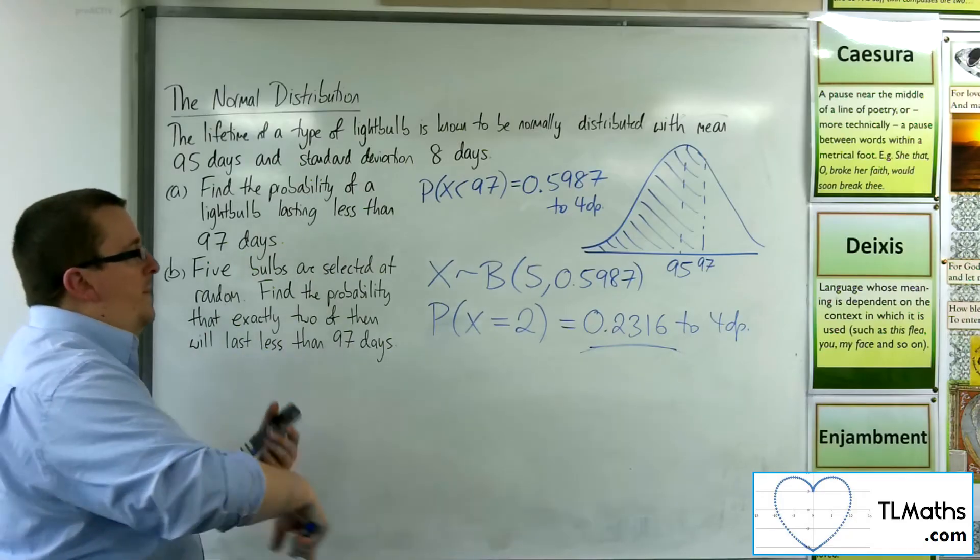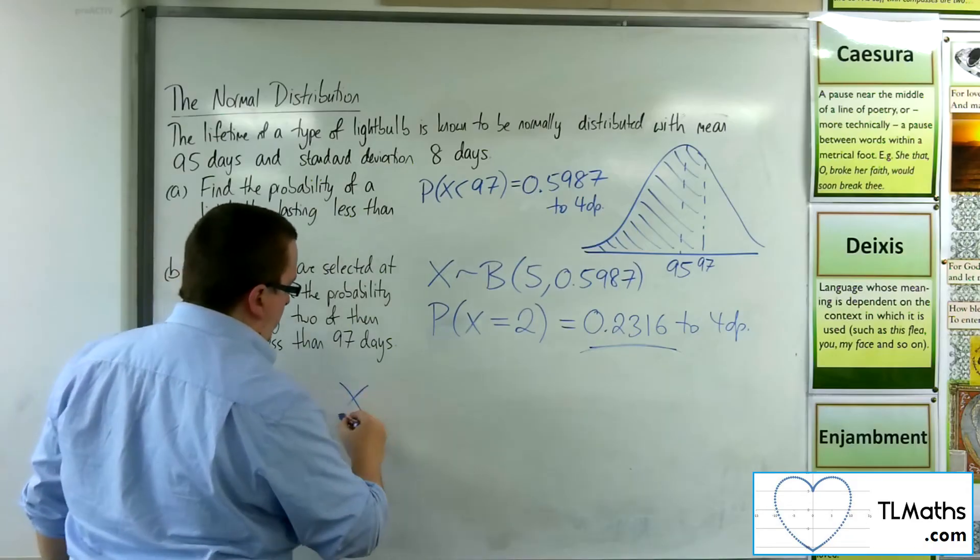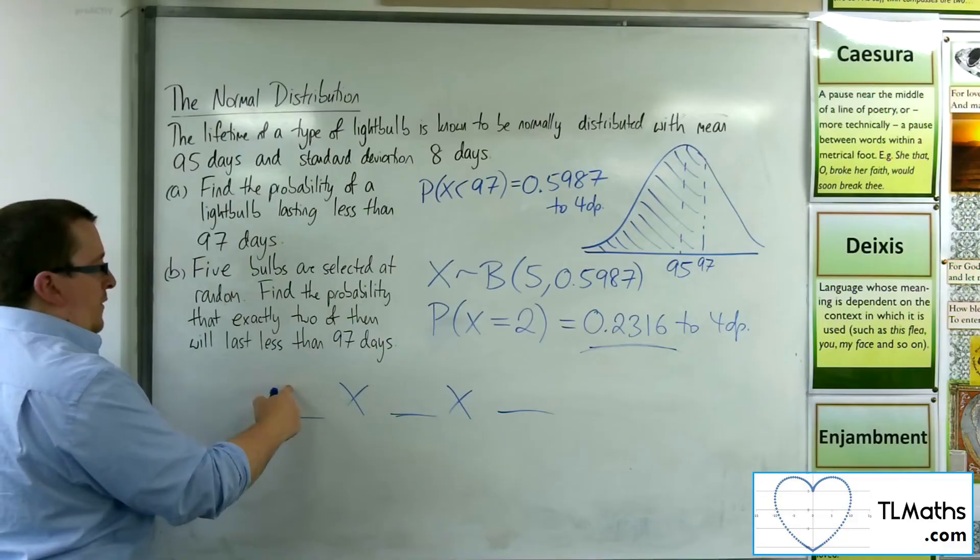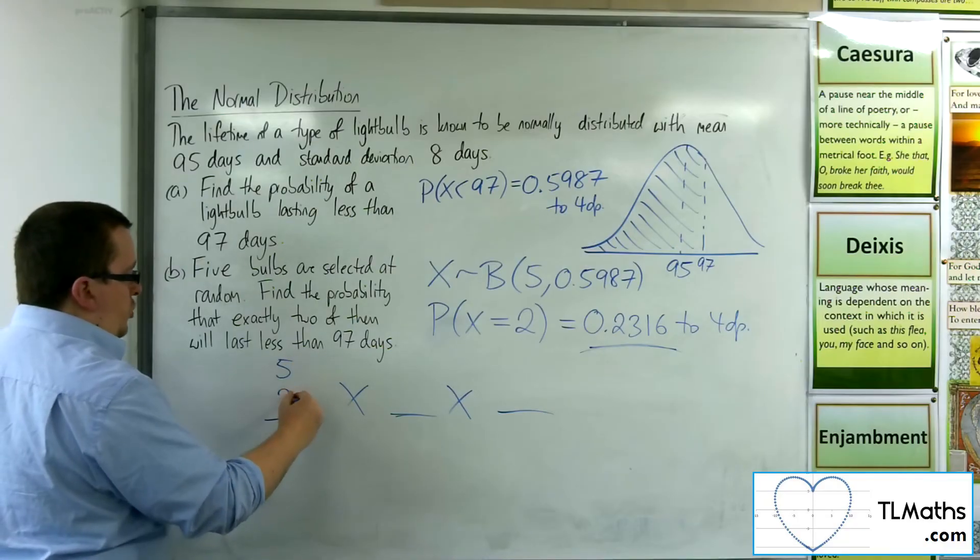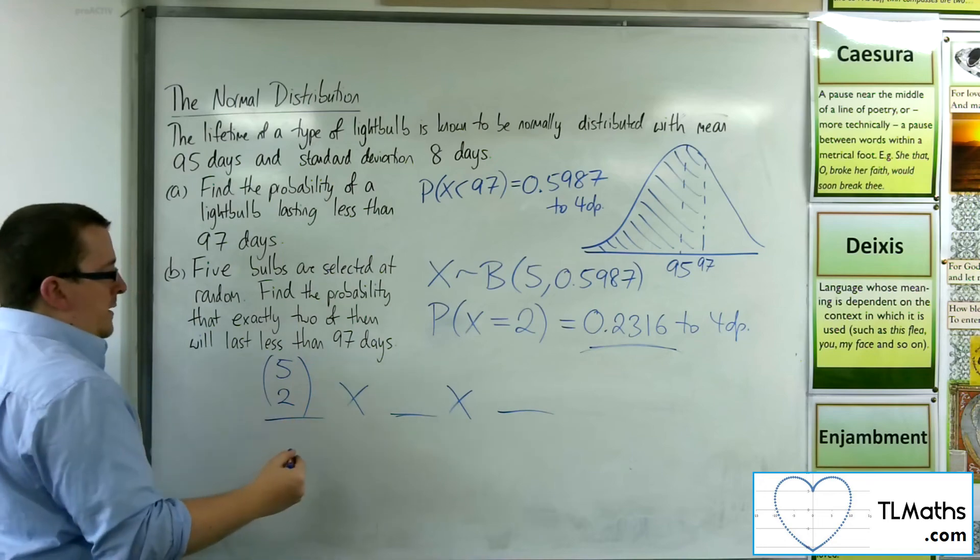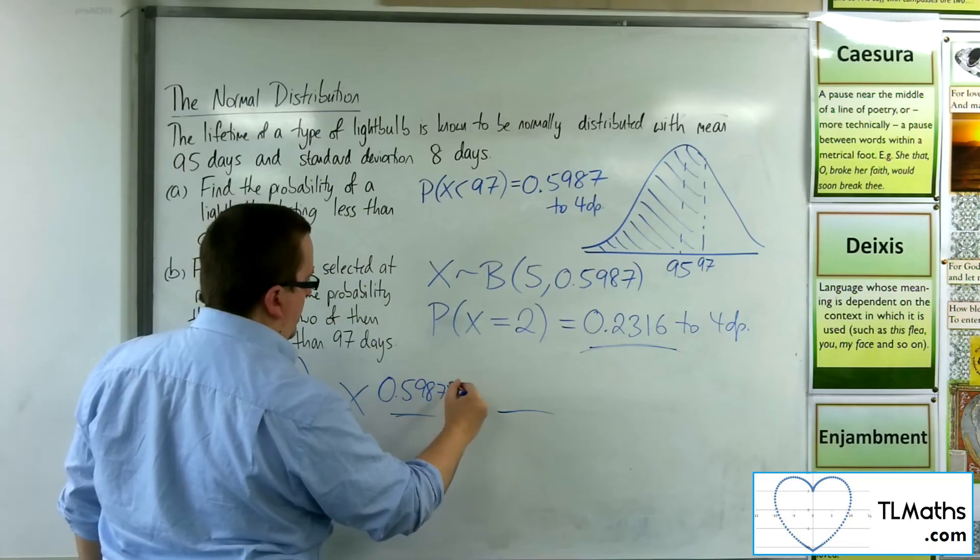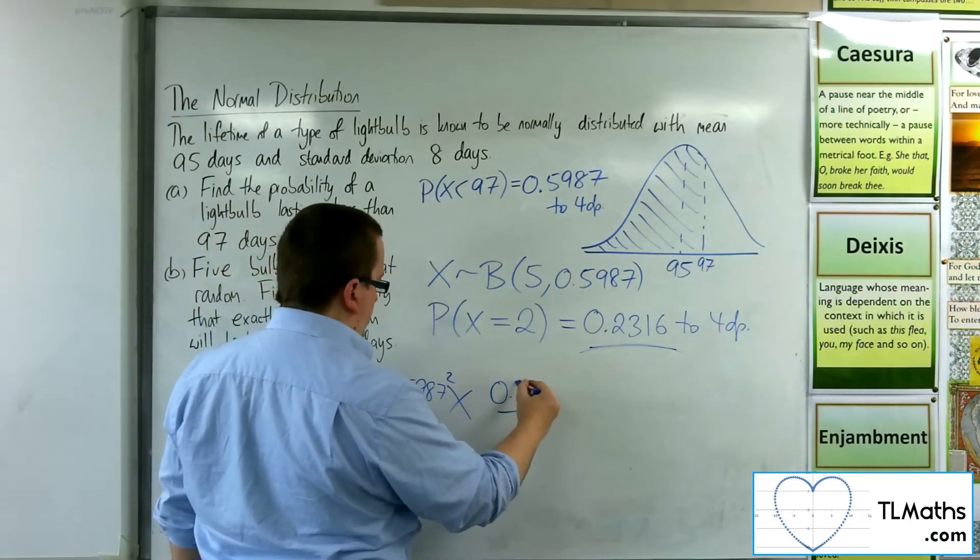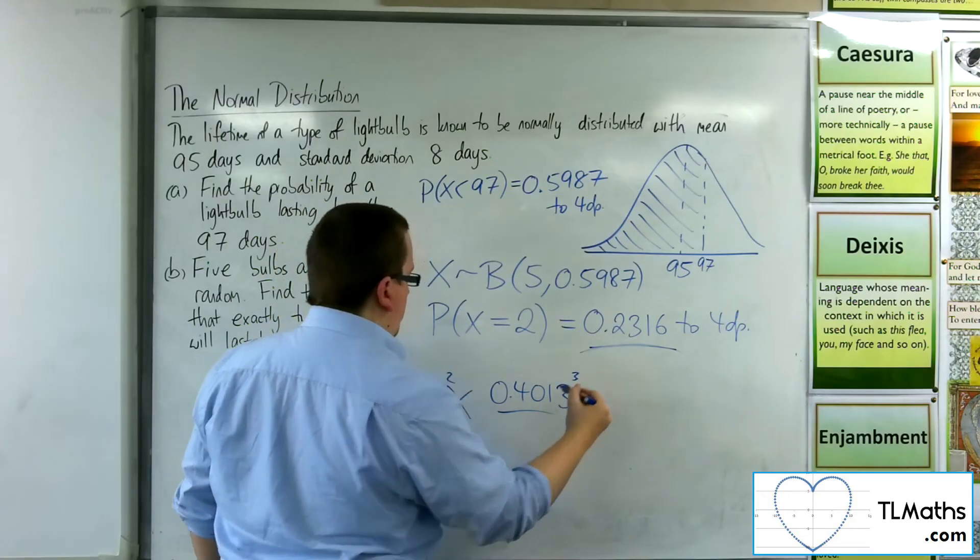So the formula that's going on in the background is the three-part formula for binomials we're used to, where we've got the NCR, the Pascal's Triangle. We want five options and choose two. Because we want the probability of success, 0.5987, to happen twice. And we want probability of failure, which is 0.4013, to happen three times.